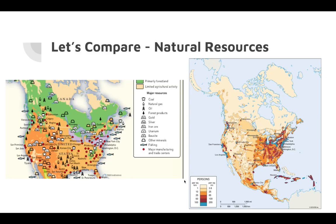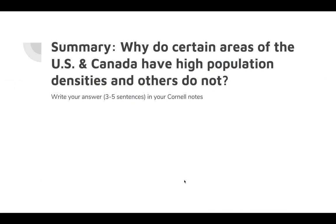In summary, I need you to write in your Cornell notes a summary of three to five sentences to answer the question: why do certain areas of the US and Canada have high population densities and others do not?